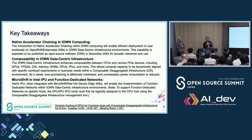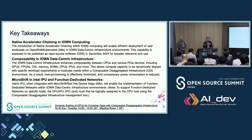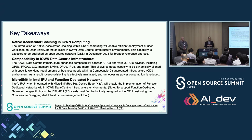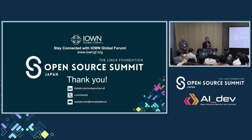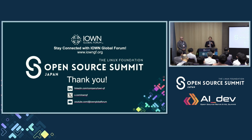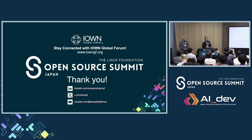Finally, we demonstrated MicroShift, a lightweight Kubernetes setup based on RHEL, running on the Intel IPU ACC. This setup enables function-specific networking via the DPU operator in the composite disaggregated infrastructure. We are actively working in the IWON Global Forum, especially in the Data-Centric Computing and Networking Service Taskforce, to help shape the future of data center infrastructure under the all-photonic network. If you are interested in learning more about data-centric infrastructure, please join us in the IWON Global Forum. Thank you.